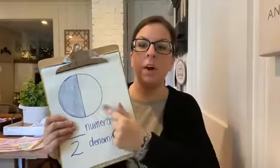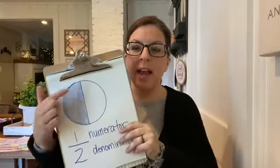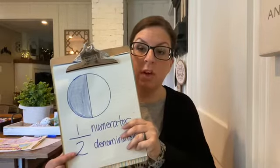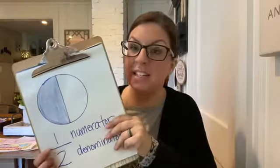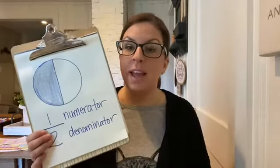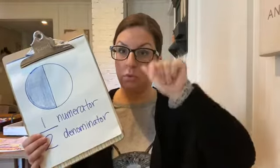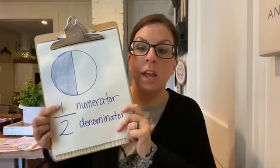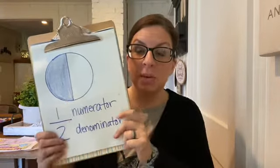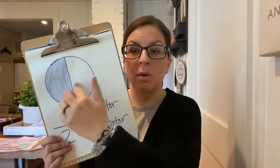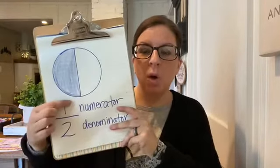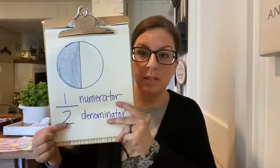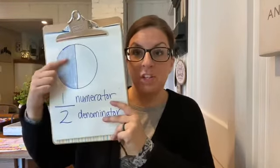Right here I have 1 whole circle, and I have 1 half of it colored in — 1 half. So 1 half is a fraction. Now, this line right here is actually a division line. Remember when we talked about division, we said you could write it in a few different ways — you could use a division sign, or you can use a line. This line is a division line, so it's 1 divided by 2, or 1 divided into 2 pieces. We have 1 whole divided into 2 pieces, and 1 out of those 2 pieces is shaded in.